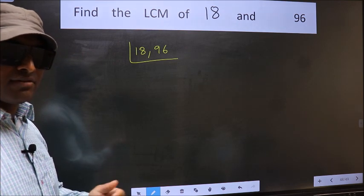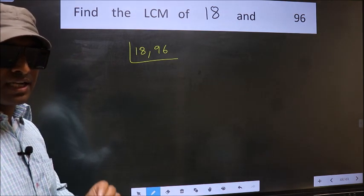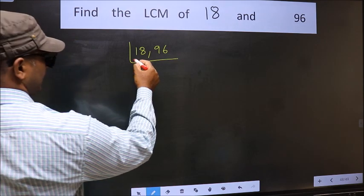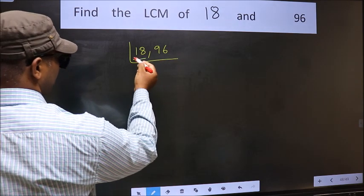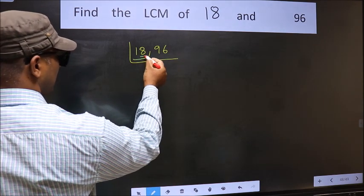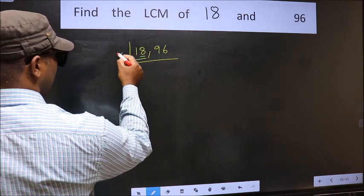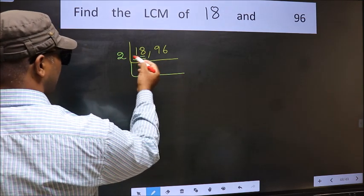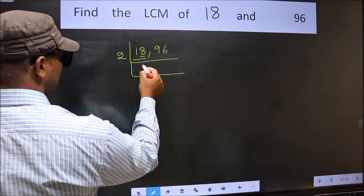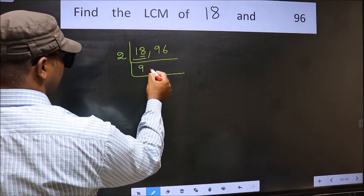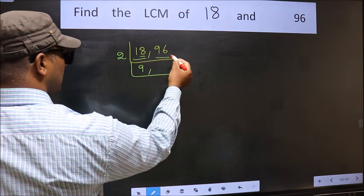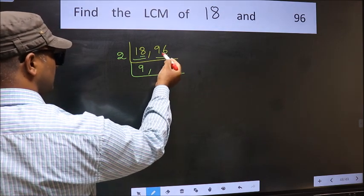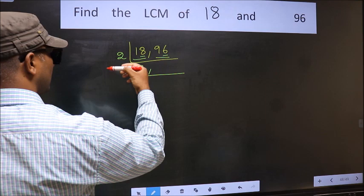Now we should focus on the first number, which is 18. The last digit is 8, which is even, so we take 2. The other number is 96 — last digit 6, also even, so this is also divisible by 2.